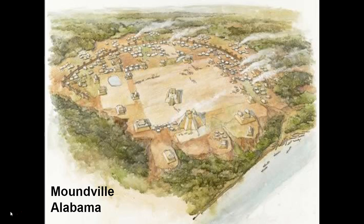You can see the dense arrangement of houses both within and immediately outside the stockade, as well as an arrangement of mounds around a central plaza. The largest mound, Mound A, near the foreground at the edge of the plaza, was believed to support the residence of the chief. Other mounds along the plaza supported residences for other important people, perhaps leaders of different lineages or clans. In the center of the plaza is a mound that supported a temple, oriented towards solstitial sunrise and sunset.